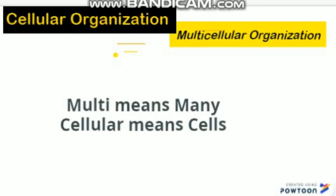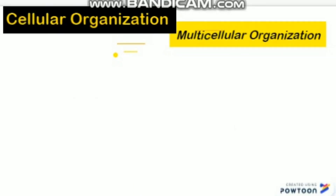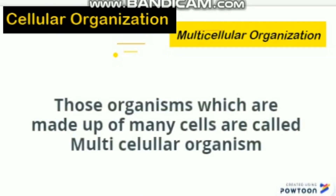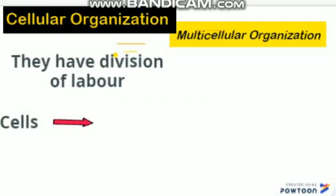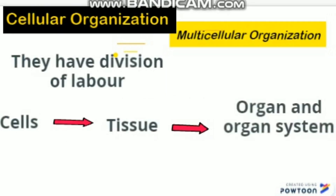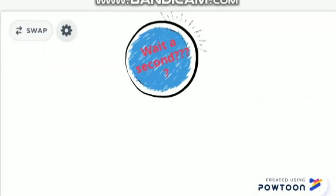'Multi' means many and 'cellular' means cells. Those organisms which are made up of many cells are called multicellular organisms. They have division of labor — some cells make tissues, tissues make organs, and organs form organ systems, and all of them work in coordination.